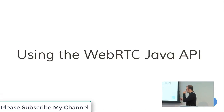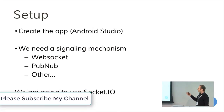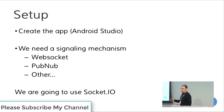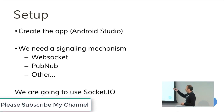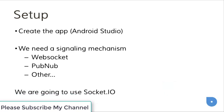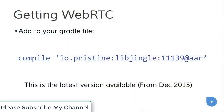Let's start with using the Java API to create an application — this is the fun part. The setup: we create a single activity application using Android Studio. To start with WebRTC, we need to decide on a signaling mechanism — you can use WebSocket, PubNub, or even SMS. In the example, I'm going to use Socket.io, which is very easy to set up a server with. To get WebRTC, the easiest way is to get a pre-build like Pristine.io. You add that to your Gradle file and you already have all the APIs needed to use WebRTC — it's the only line you have to add.